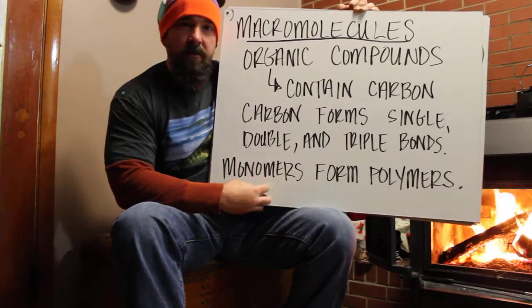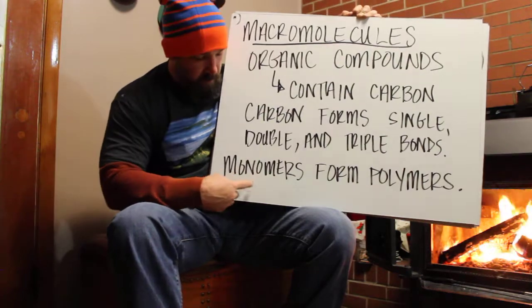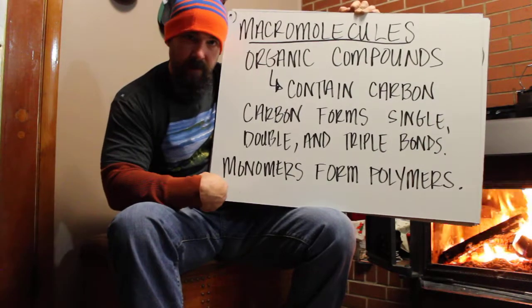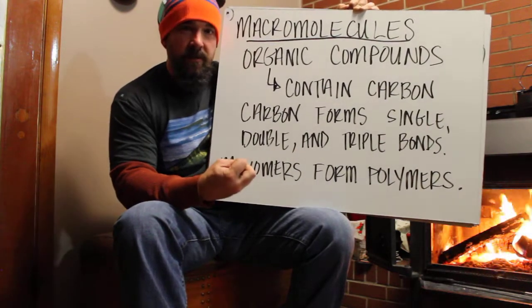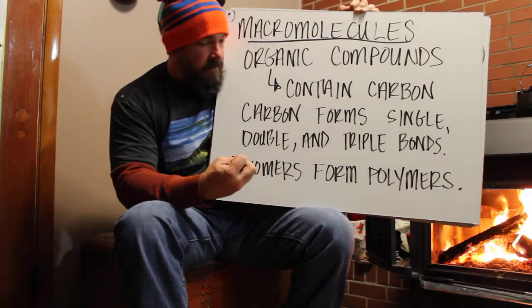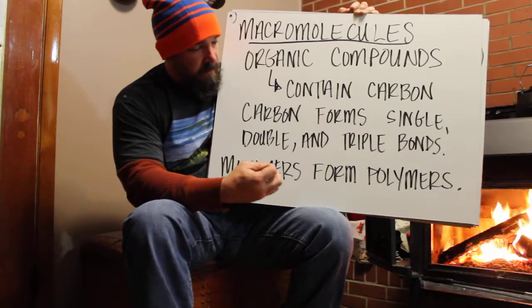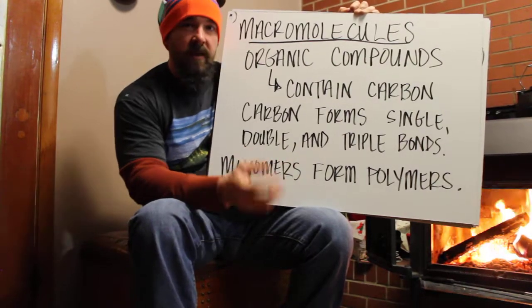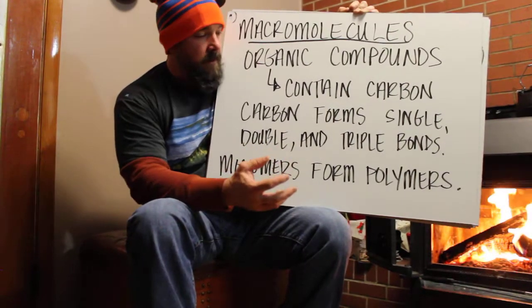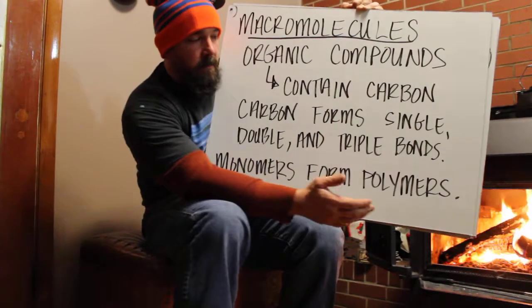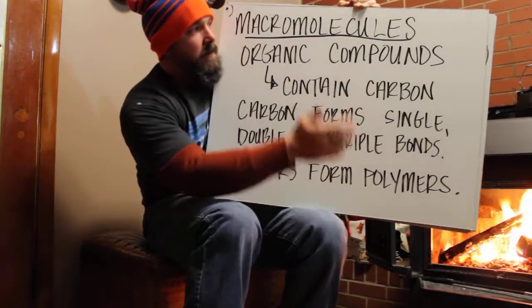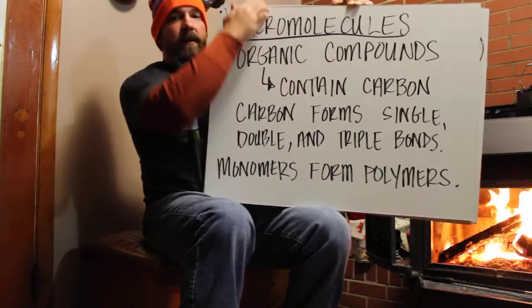Monomers are the building blocks. Mono means one, and so these are the single elements — the acids and things like that — that form chains and combine together to form the polymers, or the macromolecules.